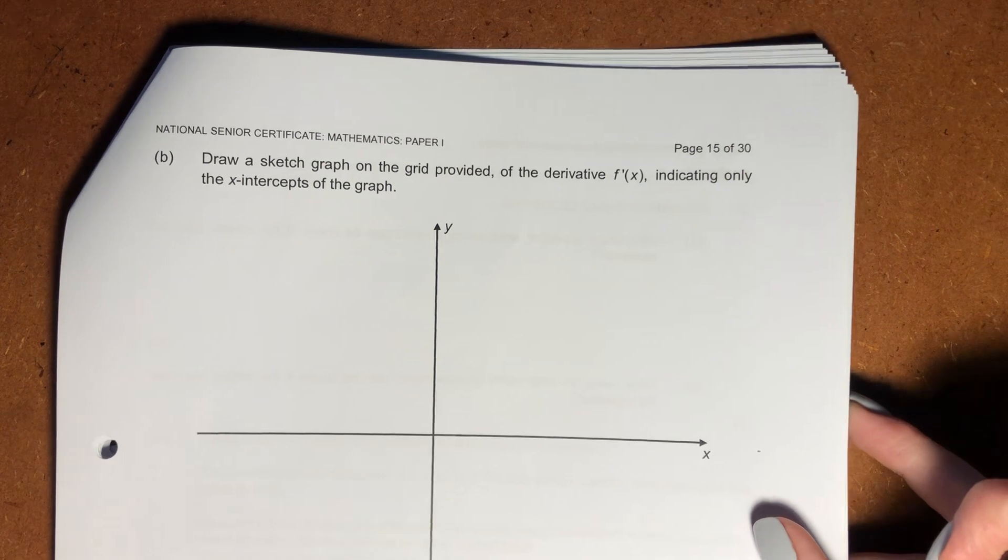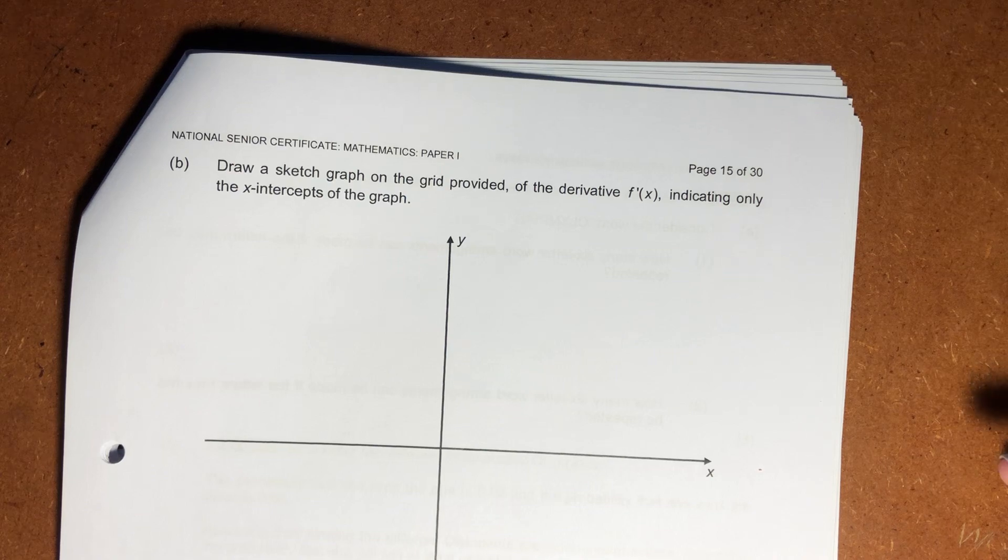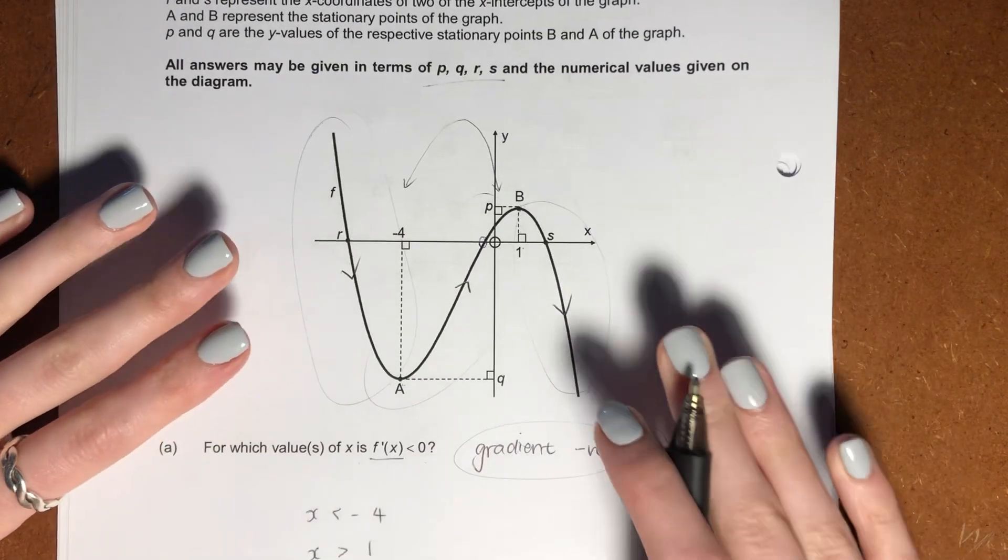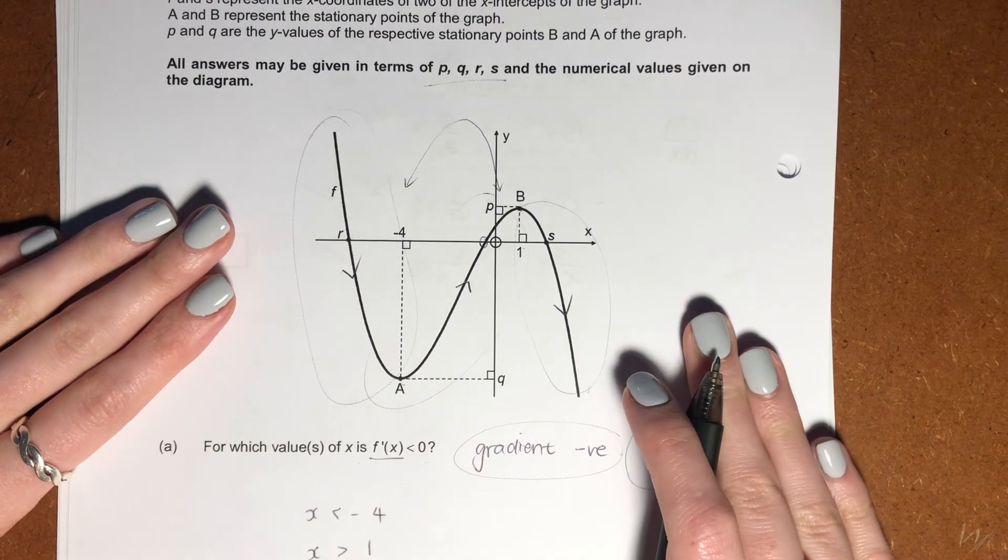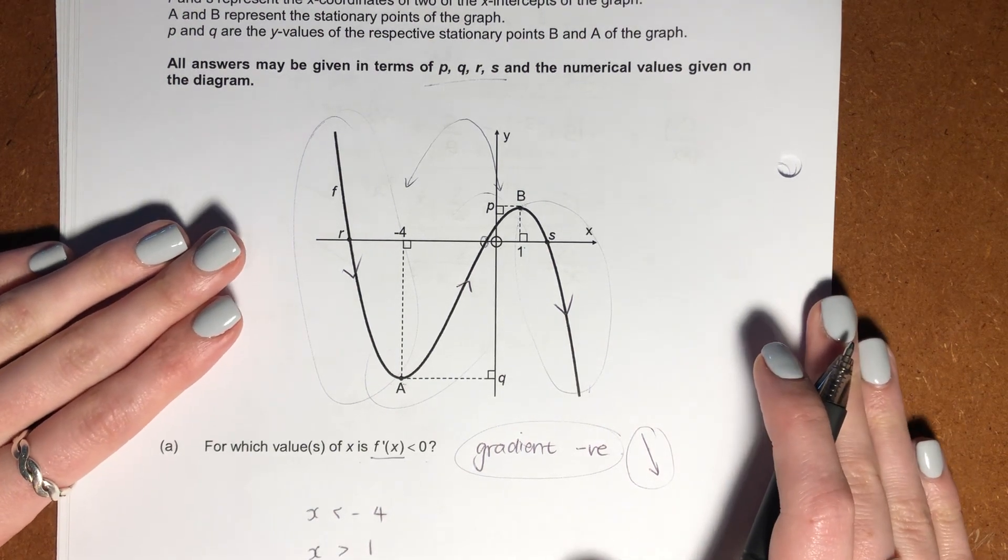Let's now look over here. It says, draw a sketch on the grid provided of the derivative f'(x), indicating only the x-intercepts of the graph. Now, you should know that when we get the derivative of a cubic graph, it's a parabola. When we get the derivative of a parabola, it's a straight line. These are things you should know.